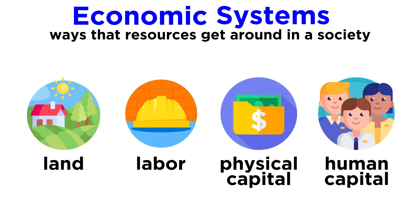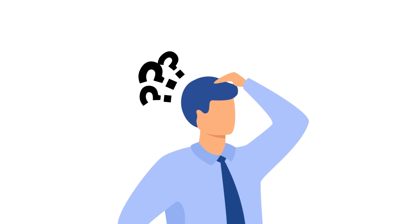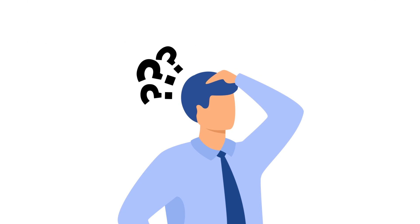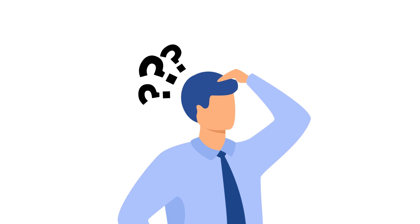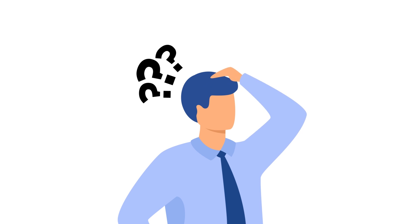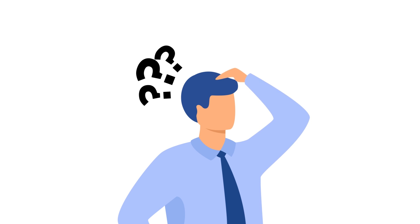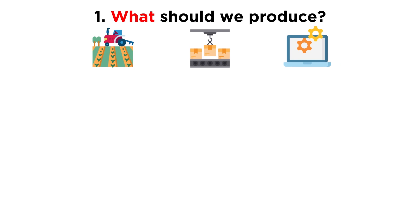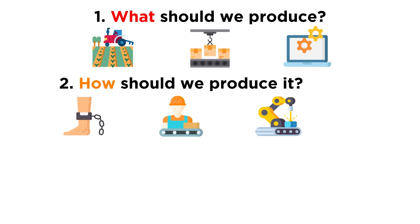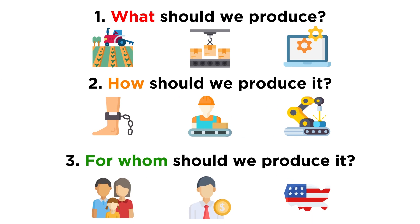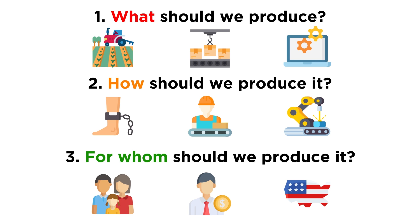There are three questions that can serve as a guide for which economic system to choose when a society decides to produce things. These are generally as follows. First, what should we produce? Second, how should we produce it? And third, for whom should we produce it?